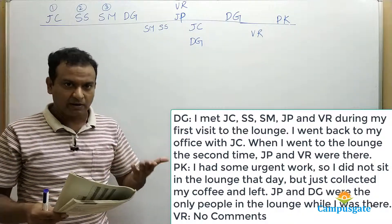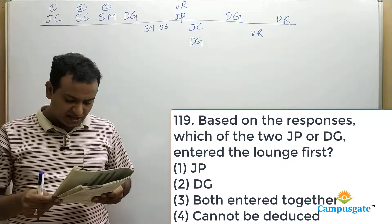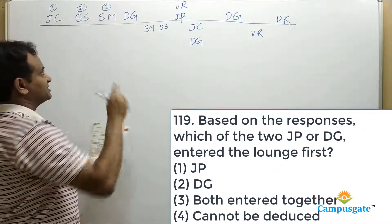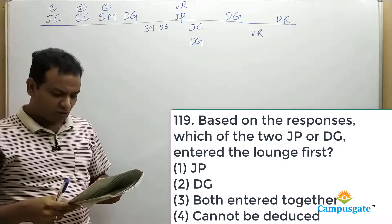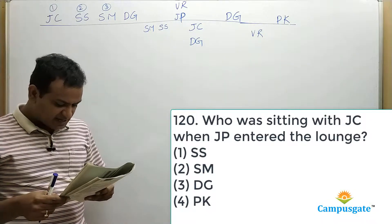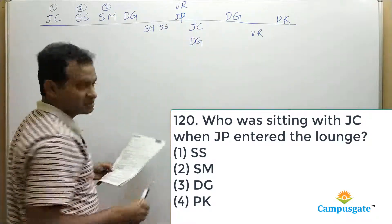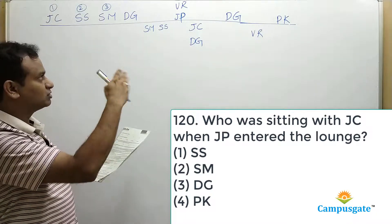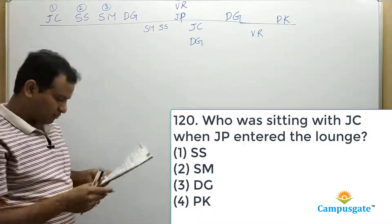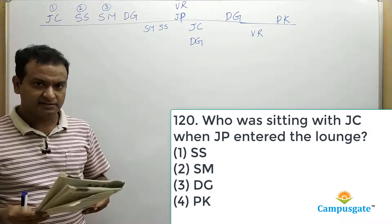Now let us look at the questions. Question 1: Based on the responses, which of the two — JP and DG — entered the lounge first? DG is the fourth person to arrive, and JP arrived later with VR. So DG entered the lounge first — we go for answer option two. Question 2: Who was sitting with JC when JP entered the lounge? When JP entered, JC and DG were both present, and SM and SS had already left. So the person sitting with JC was DG — option three is correct.